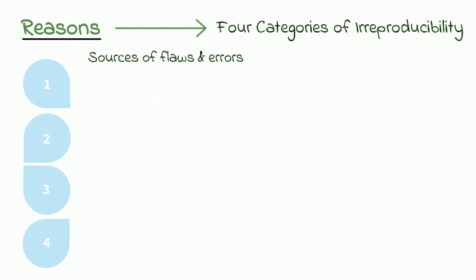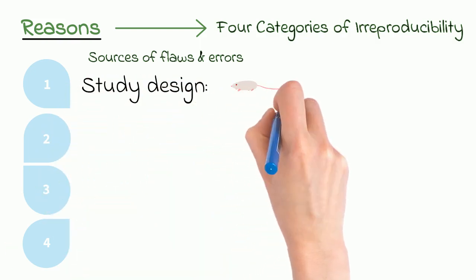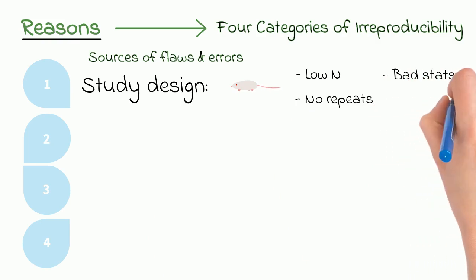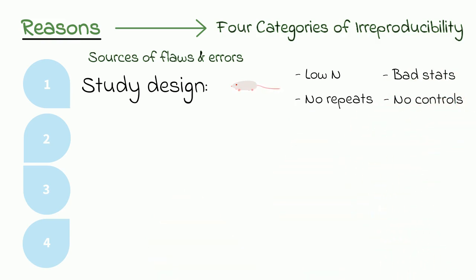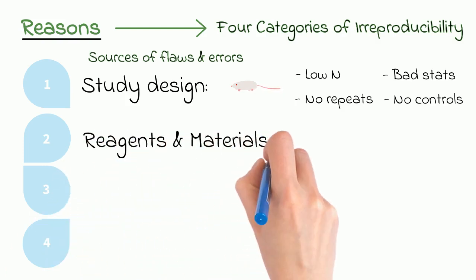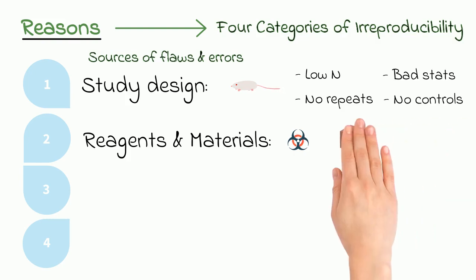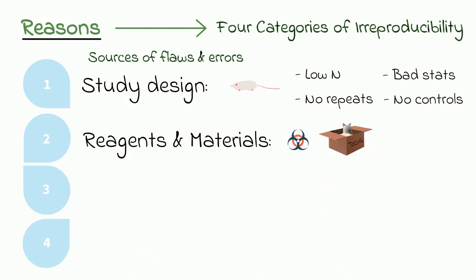The first category is study design — things like not having enough samples for proper statistical testing, not repeating experiments, using inappropriate statistical methods, or failing to have proper controls. The second category is biological reagents and reference materials. This is where things like contamination, mislabeling, and handling mistakes come into play for either the biological samples or the reagents and tools that the researchers are using.